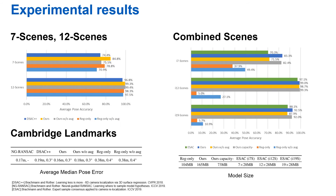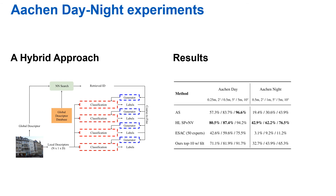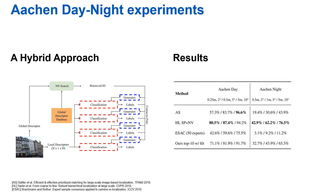Our method outperforms the baseline regression network and allows us to train compact models which scale robustly to large environments. We achieve state-of-the-art results on several datasets. For large-scale outdoor localization on the Aachen Day-Night dataset, we present a hybrid approach which outperforms existing scene coordinate regression methods and narrows the gap to the classical feature-based methods.